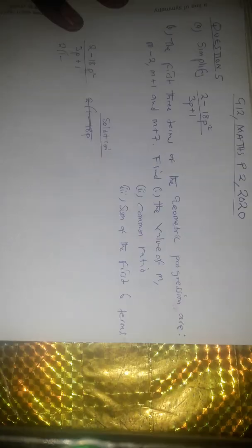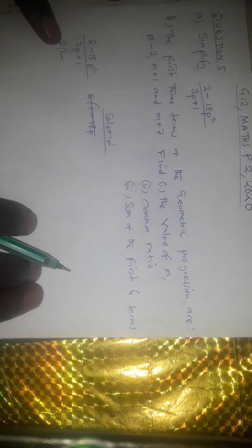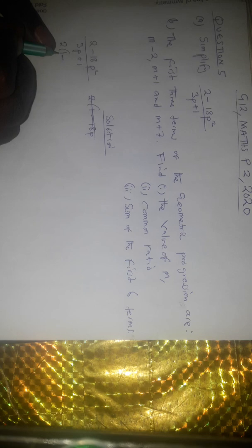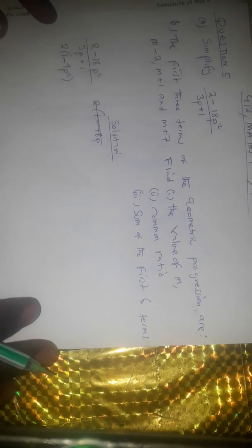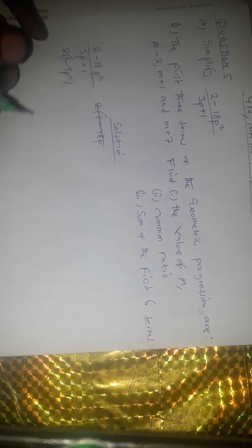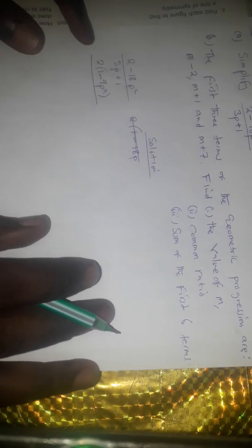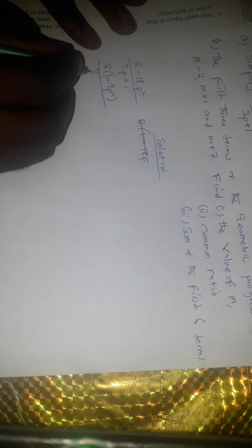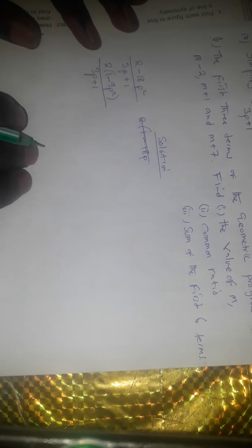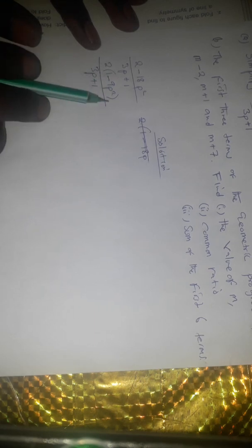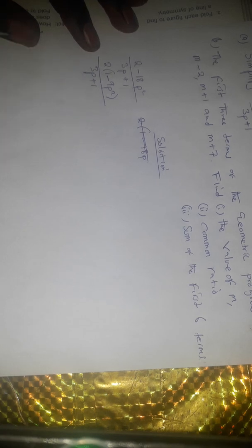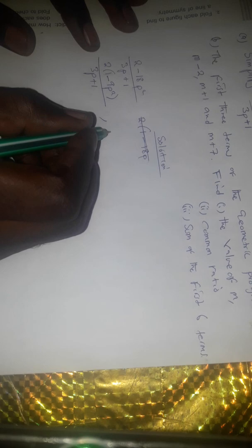So we are going to have 2 outside, and we remain with 1 inside and 9p squared for the numerator. We maintain the denominator part, which is 3p plus 1. Again, when you look at what we have in the brackets, this is a difference of two squares, so we maintain the 2 outside.